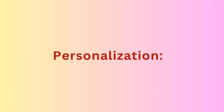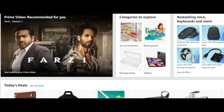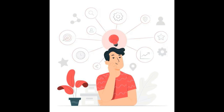Next is Personalization — Customized User Experiences. Generative AI can analyze user data to create personalized content, whether it is tailored news articles, product recommendations, or social media content. For example, Netflix and Amazon are prime examples of companies using AI to personalize user experiences. They analyze user behavior and preferences to recommend movies, products, and content tailored to individual users, enhancing user engagement and satisfaction.